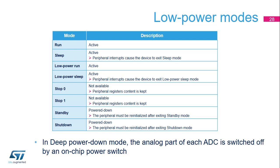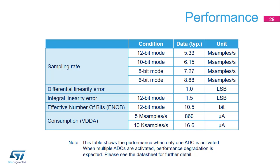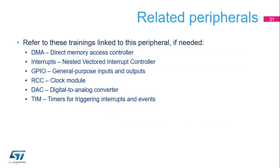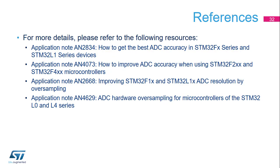This is the recommended mode whenever an ADC is not used. The following table shows performance parameters for the ADC. This table highlights the new features implemented in the STM32L5's ADCs with regard to the STM32F3's ADCs. These peripherals may need to be specifically configured for correct use with the ADCs. Please refer to the corresponding peripheral training modules for more information. Several application notes dedicated to analog-to-digital converters are available. To learn more about ADCs, you can visit a wide range of webpages discussing successive approximation analog-to-digital converters.